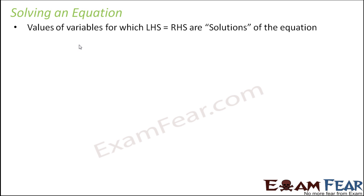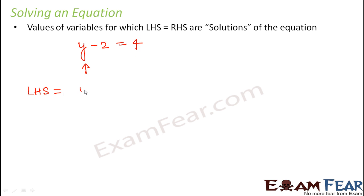Let's take an example. Say you have an equation y minus 2 is equal to 4, where these are two expressions which are equated. What would be a solution of this equation? Any value of y for which the left hand side is equal to the right hand side. Here, the left hand side is y minus 2 and the right hand side is 4. We have to find the value of y for which left hand side equals right hand side.